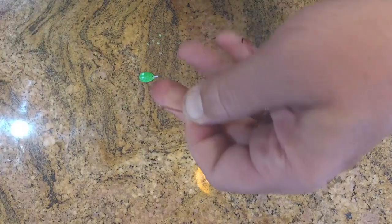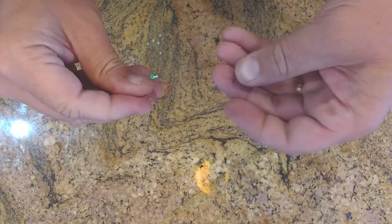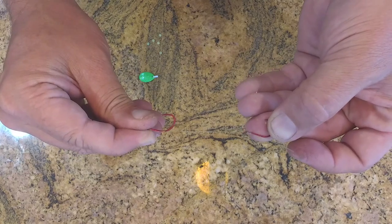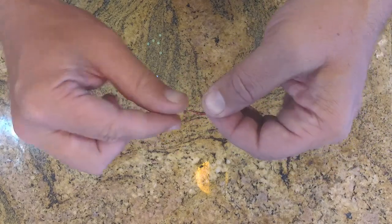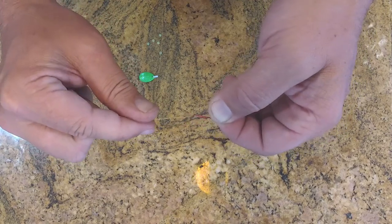And there you have a double snell knot system. Now this is a very good knot. I really don't recommend for rigs using any other knot than the snell knot. It's just very strong and the way it pulls, it's not pulling on the knot itself.